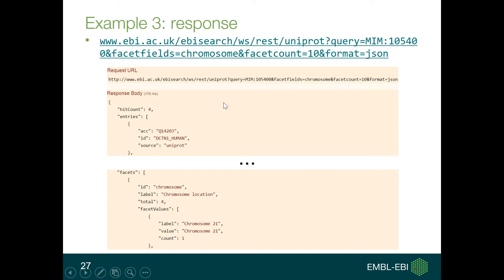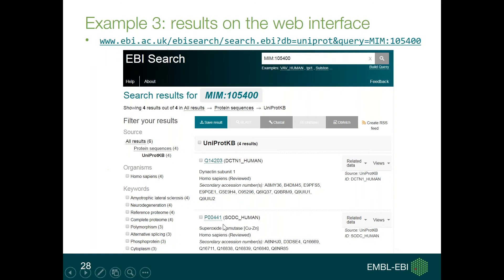The response will provide the search results matching the search criteria. We can see there are four matches — a hit count of four — meaning there are four proteins with a OMIM identifier linked to the disease we are focused on. You can also see the values associated to the facet chromosome: in this case, 21, 22, 1, and 2.